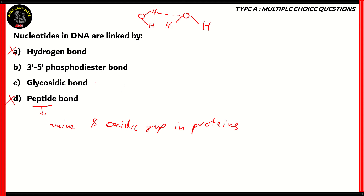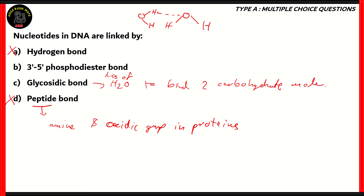Option C, glycosidic bond, involves loss of H₂O to bind two carbohydrate molecules. This is usually found in the case of glucose binding together to form sucrose. So option C is again incorrect.